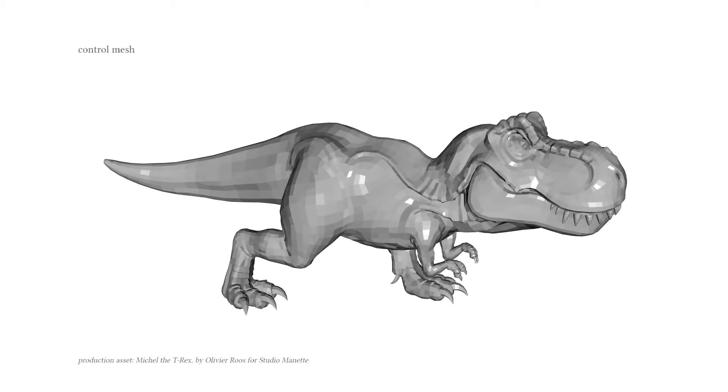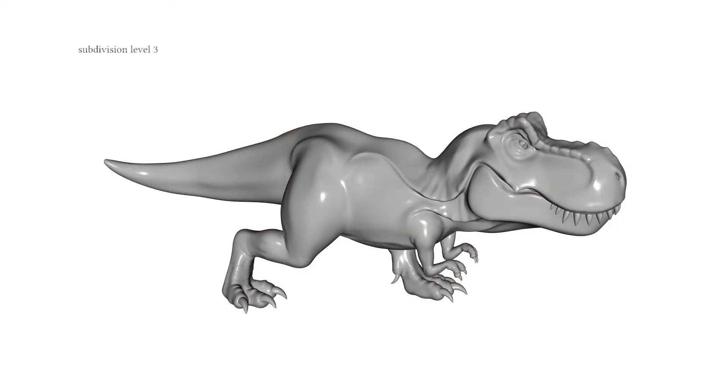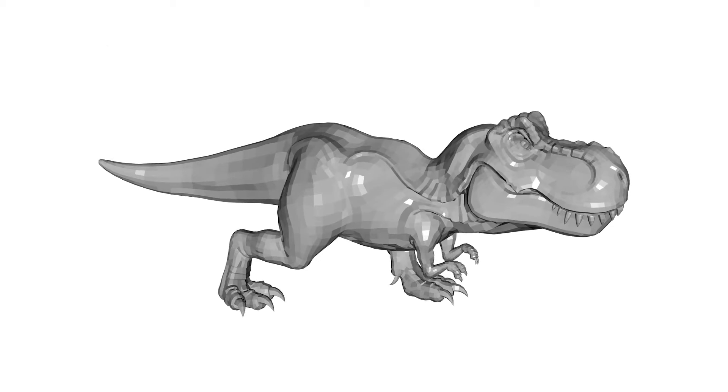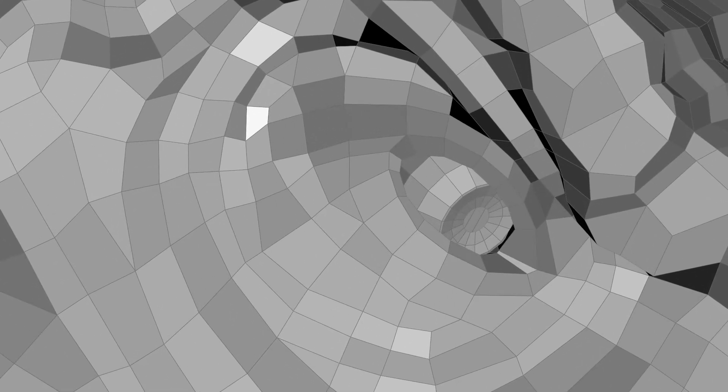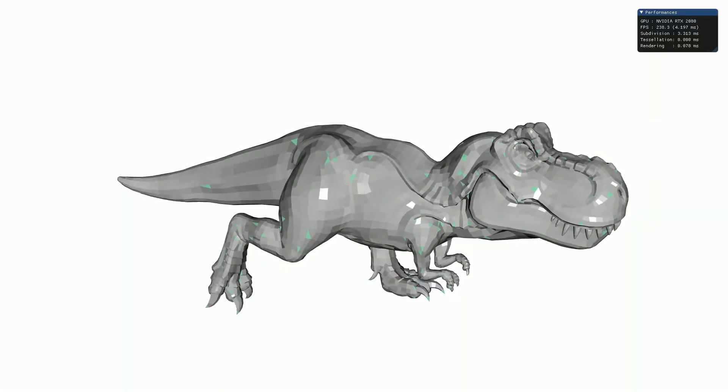We introduce a novel method to compute Catmull-Clark subdivision surfaces in real-time using a modern GPU. Our method supports non-quad faces, boundaries, and semi-sharp creases, all of which can be animated across frames.